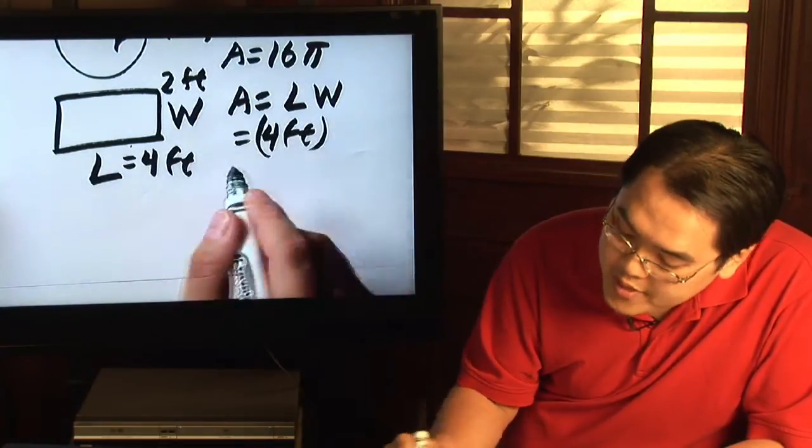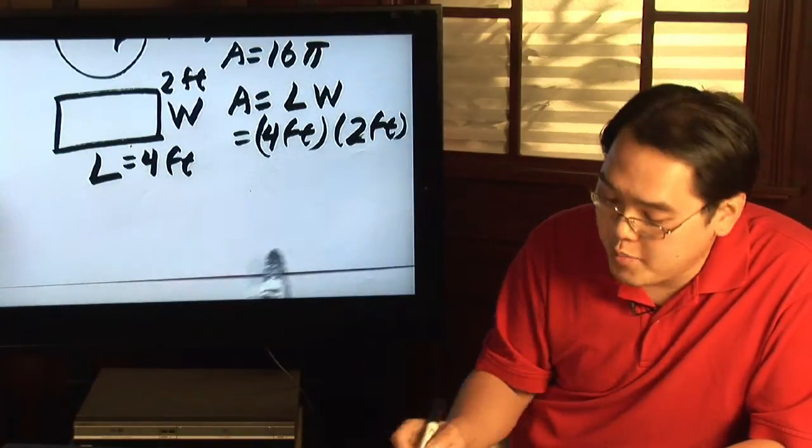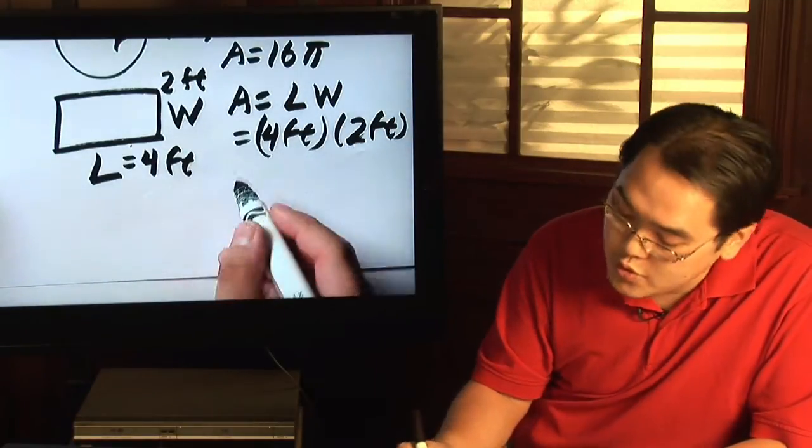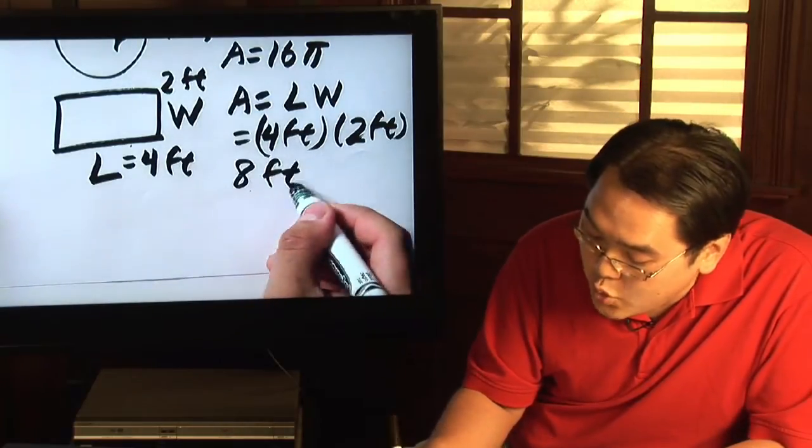So you multiply the numbers, four times two, which is equal to eight, and feet times feet is going to be feet squared.